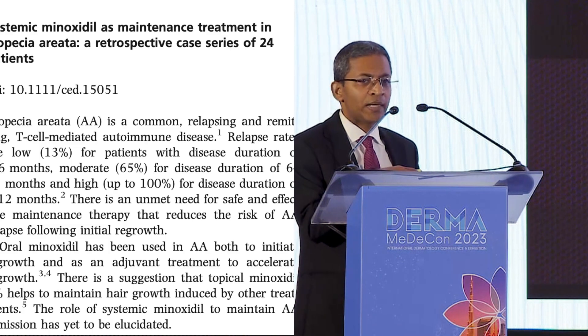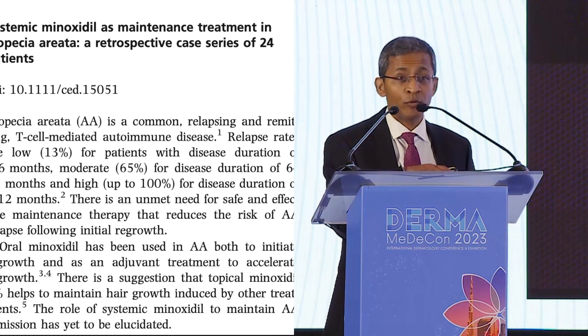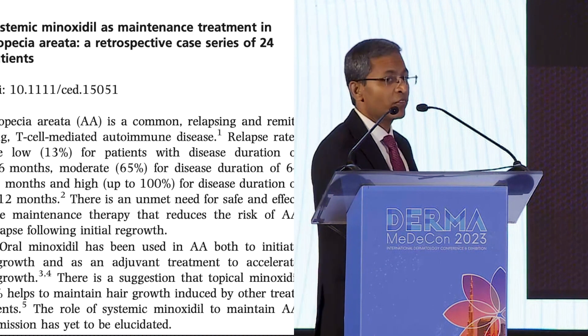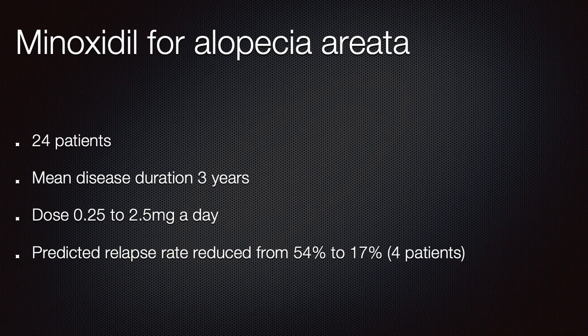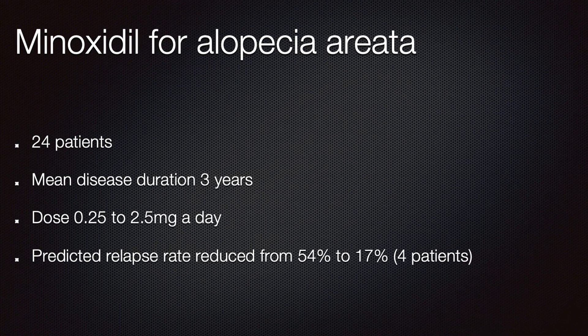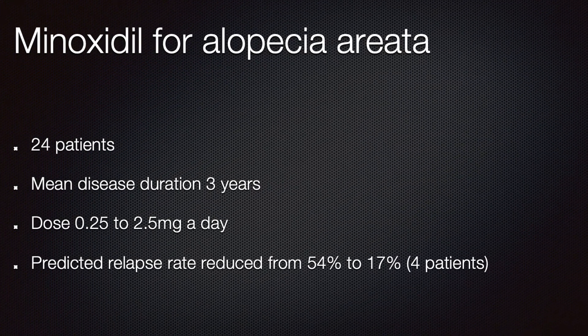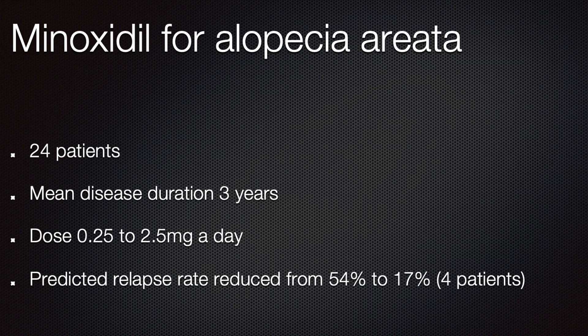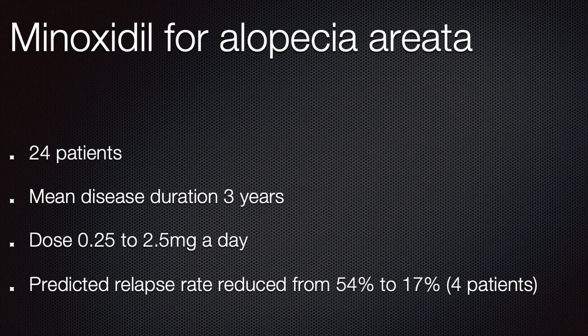You might think that an immunological condition like alopecia areata may not respond well, but a very interesting paper from Professor Sinclair showed otherwise. In a series of 24 patients using 0.25 to 2.5 milligrams per day, they used the usual alopecia areata treatment — intralesional or oral steroids — but added minoxidil, then continued minoxidil after stopping steroids. The relapse rate in those on oral minoxidil came down from an estimated 54% to just 17%, with only four patients relapsing — three mildly and only one moderately.